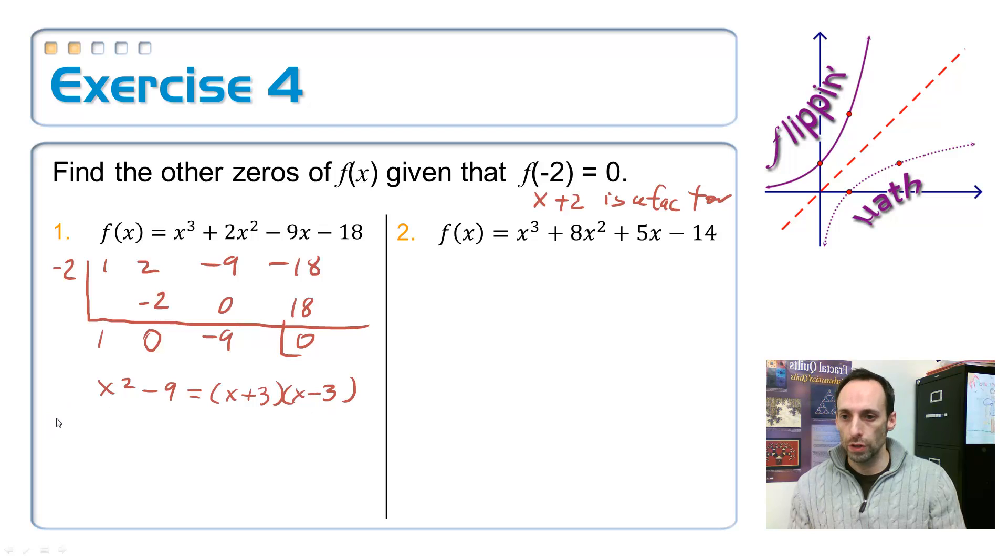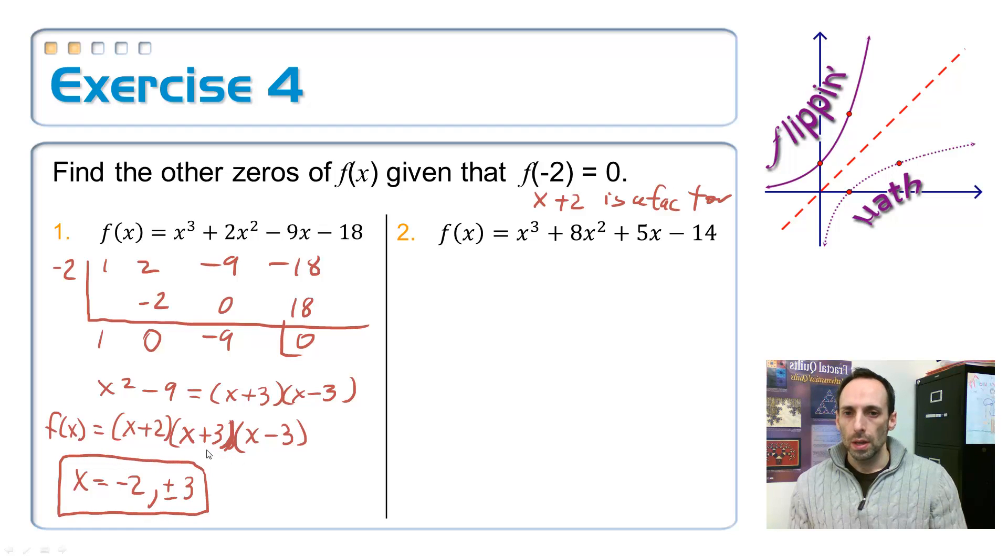So our whole function is f of x is equal to x plus 2 for the first factor, the one I was given, and then x plus 3, x minus 3. So our actual zeros, then, x is equal to a negative 2 from the first one, and then from the other two is just plus or minus 3.